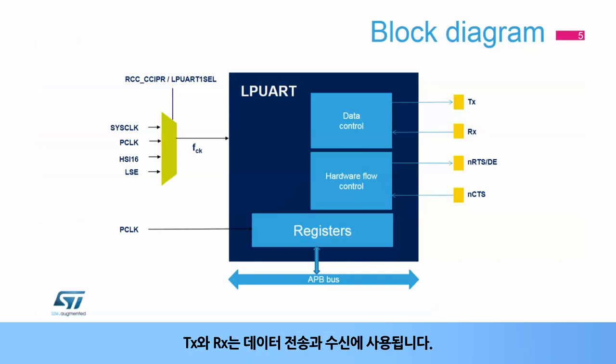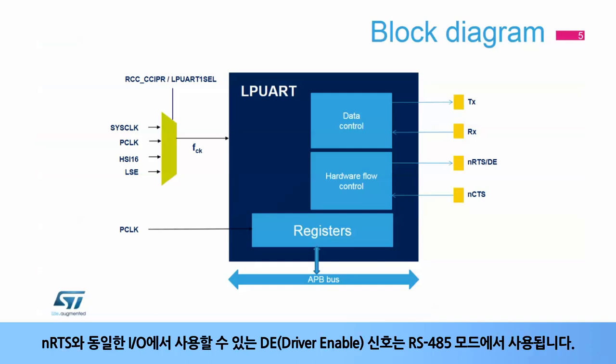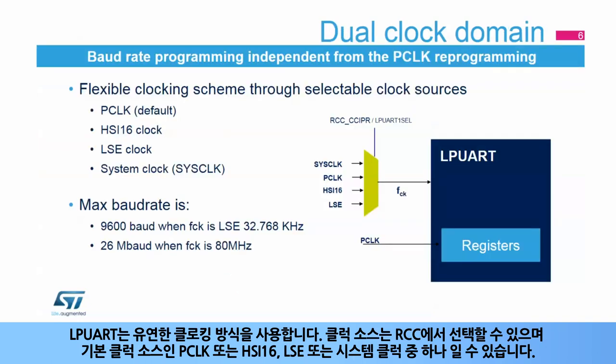TX and RX are used for data transmission and reception. NCTS and NRTS are used for RS-232 hardware flow control. The driver-enable, or DE, signal, which is available on the same I/O as NRTS, is used in RS-485 mode.